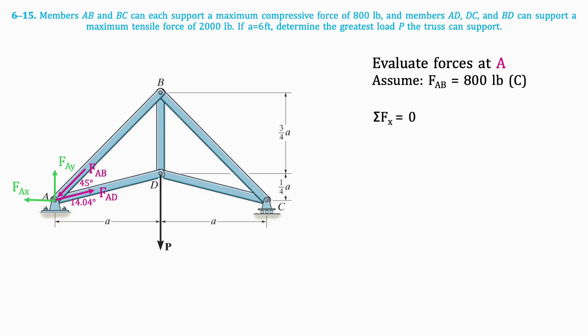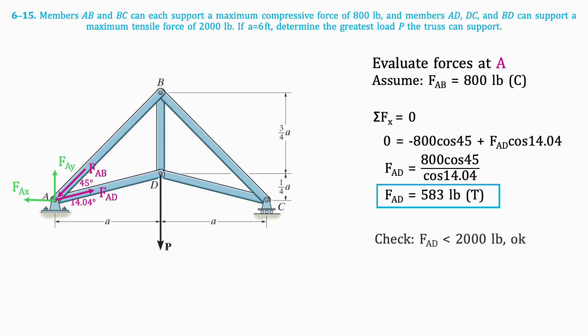We can now write an equation for the sum of forces in the x direction. We get the following equation, which when isolated for FAD, results in a tension force of 583 pounds. The question tells us that the maximum force that FAD can support is 2,000 pounds, and our answer satisfies this constraint.